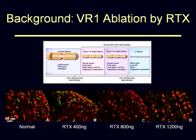Just to refresh everybody on the mechanism of action for RTX: these are the types of neurons — myelinated, thick myelinated, and then type 1 and type 2A delta and C fiber neurons. You can see that the TRPV1-positive neurons are selectively ablated by RTX. Down here you see dorsal root ganglia specimens — this is normal, this is 400 nanograms of RTX injection, 800 and 1,200. The red neurons are the myelinated neurons with N52 staining and the green neurons are the TRPV1-positive neurons. You can see the dose-dependent ablation of the TRPV1-positive neurons.